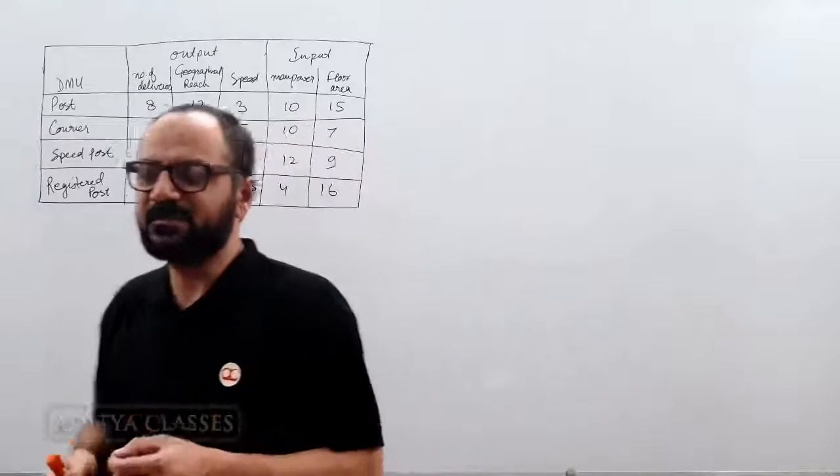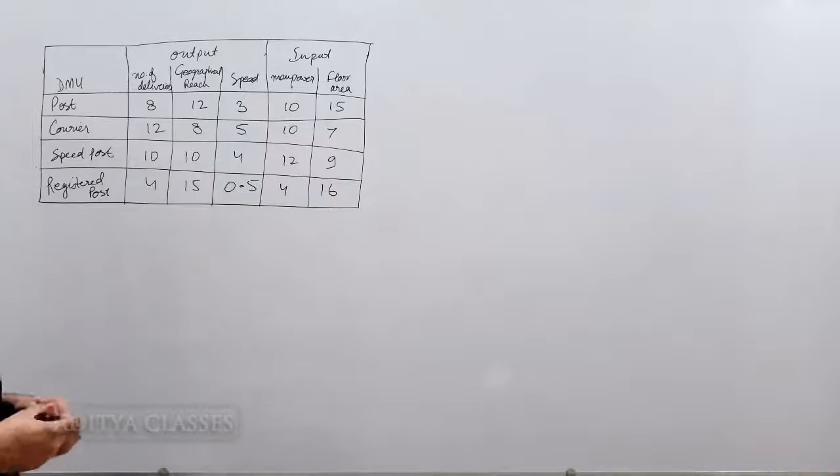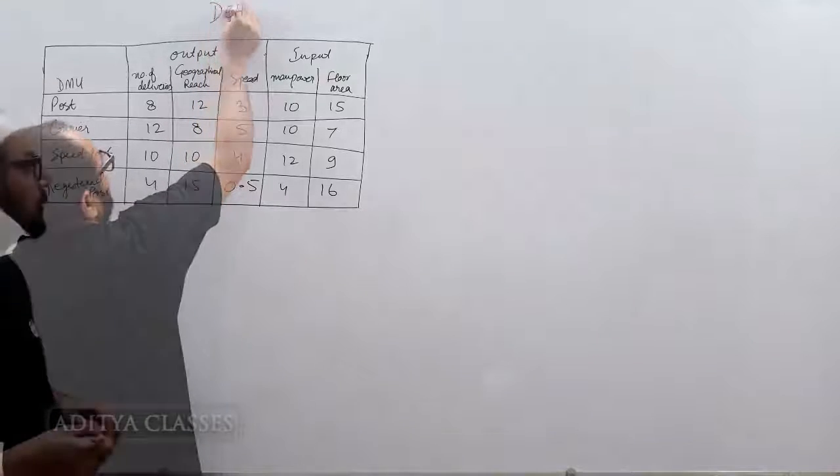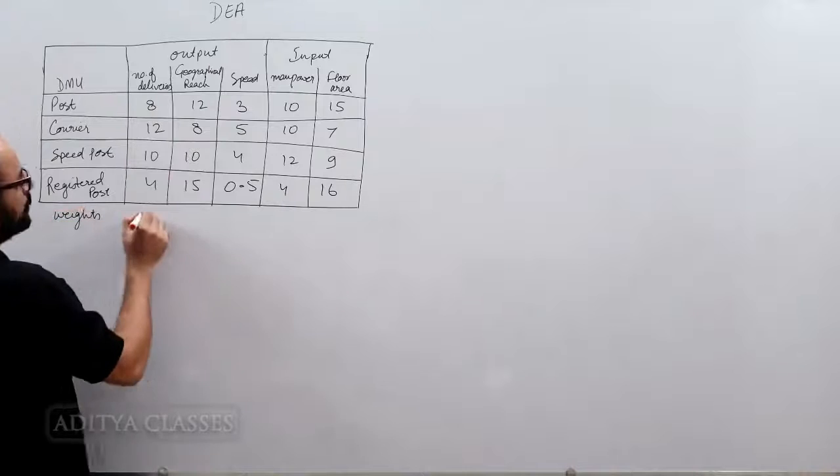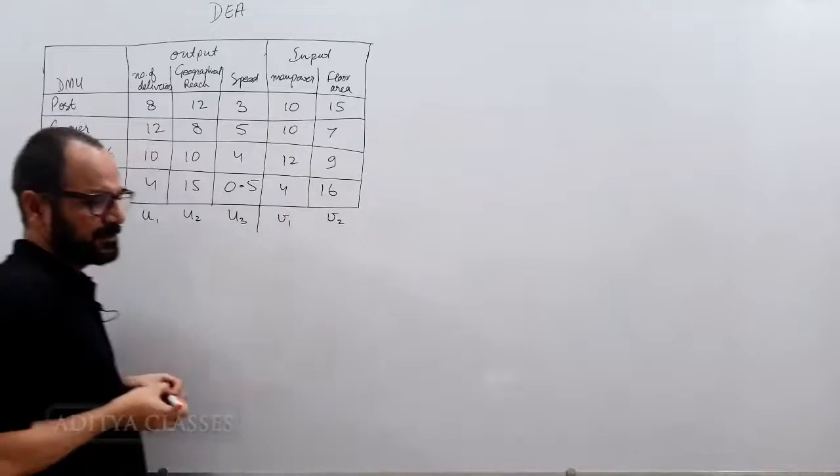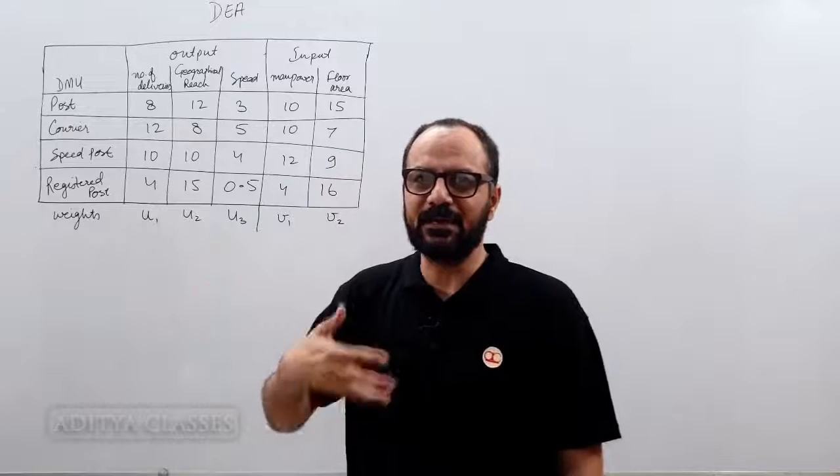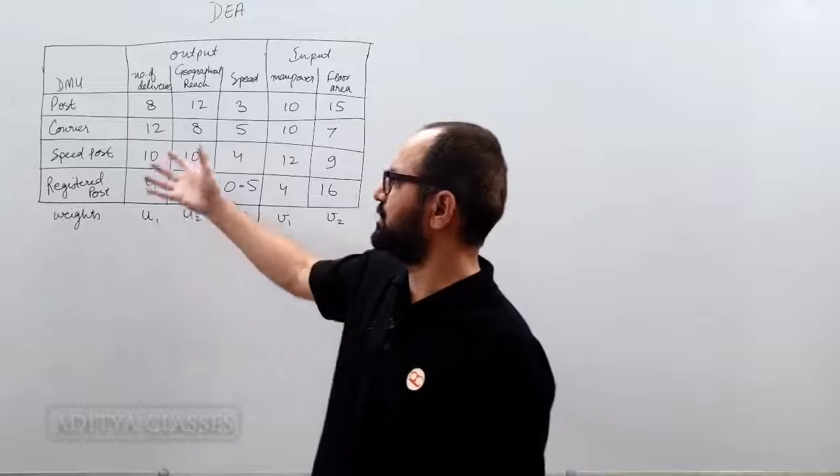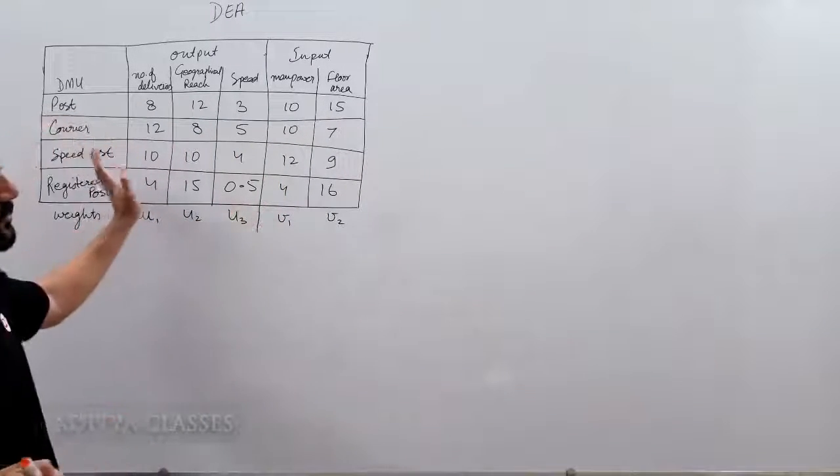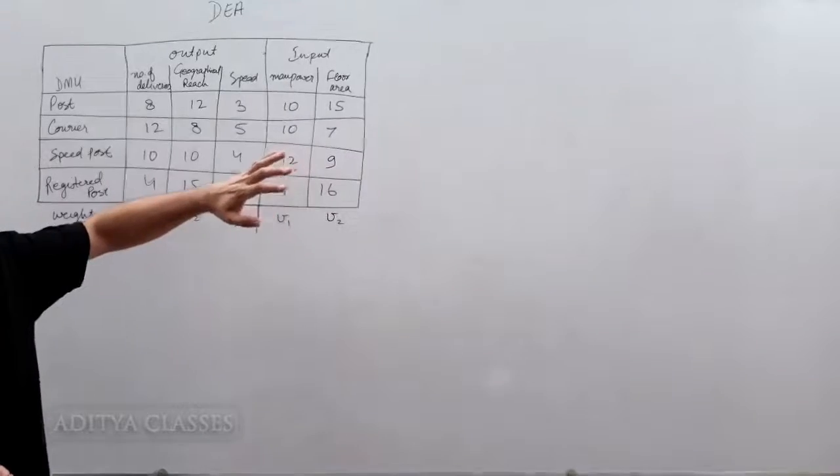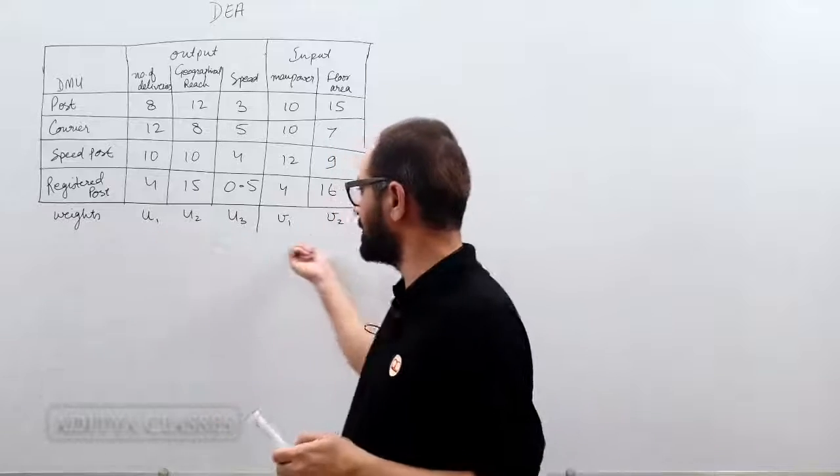Now let us go ahead and give them some variable weights and then we will see how DEA will try to optimize upon it. What these weights will do is they will try to optimize upon the inefficient units. For now we are not sure about which are the inefficient units, which are the units that will be lying on efficiency frontier. But when we solve this using simplex, it will take care of the efficient units and the inefficient units, and it will try to optimize upon these weights.